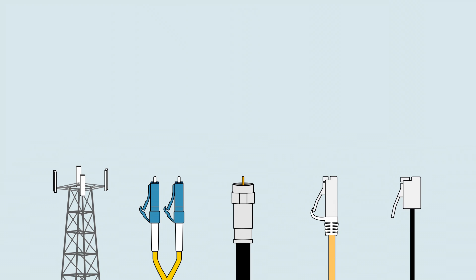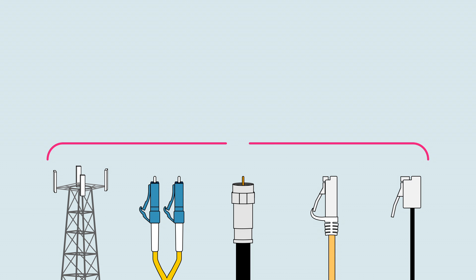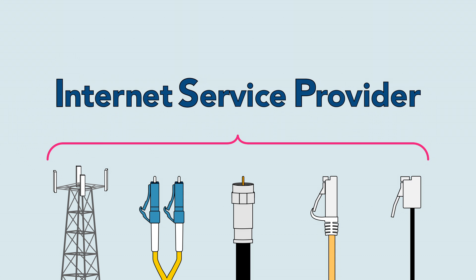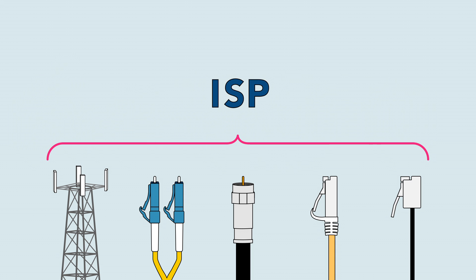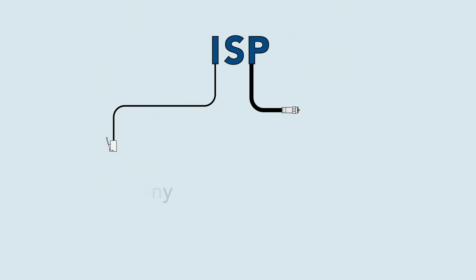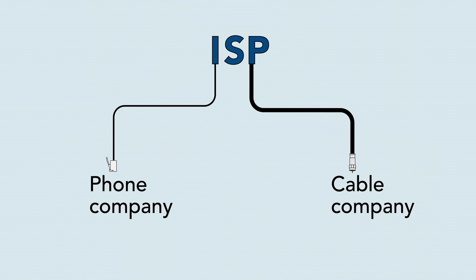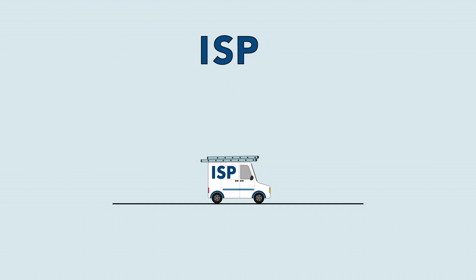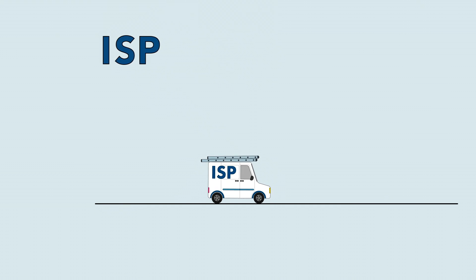No matter what kind of internet service you choose, you'll need to purchase it from an internet service provider, or ISP. Chances are, you can buy internet service from your phone or cable company, or you may want to shop around for a better price. Your ISP will guide you through the entire process of connecting to the internet.